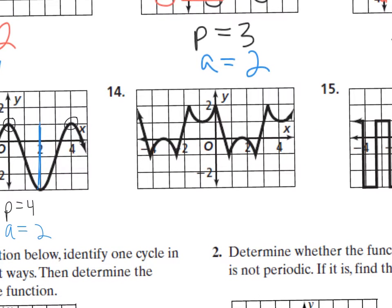This next one is a little different. This part corresponds to this part over here, and this part corresponds to this part over here. These two distances are the same, and those two distances are the period. This is going from approximately negative one and three-fourths to three and a fourth, so this distance is five. The period is five. The amplitude is the height — that distance is three — so half of that is one and a half, or 1.5.